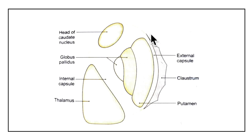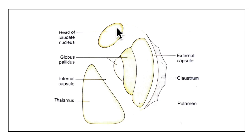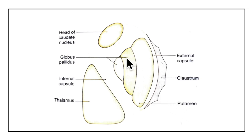In this picture you can see the horizontal section through the corpus striatum, the internal capsule, and the thalamus. The two parts of the corpus striatum are the caudate nucleus and the lentiform nucleus. The lentiform nucleus is divided into a lateral part called the putamen and a medial part called the globus pallidus. The caudate nucleus and the putamen together are known as the striatum, while the globus pallidus is called the pallidus.